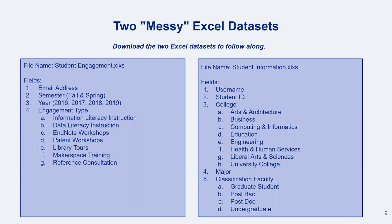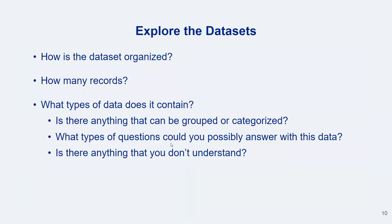If you're looking to tie engagement data with some sort of outcome measure like academic success — something like cumulative GPA, retention, or graduation data — you'll likely need to request this from your Office of Institutional Research. Before beginning any cleaning and organizing, I first like to take a quick tour of my data sets. So let's go ahead and do that, beginning with the student engagement file.